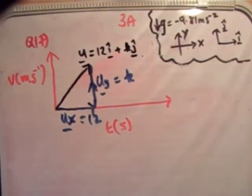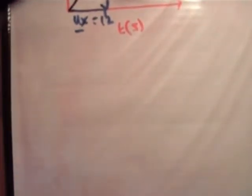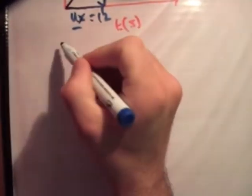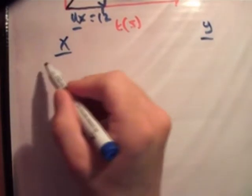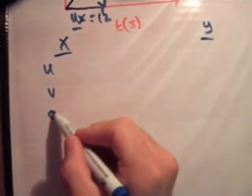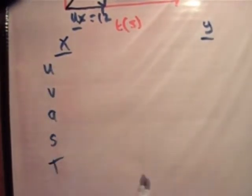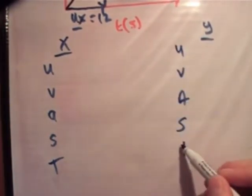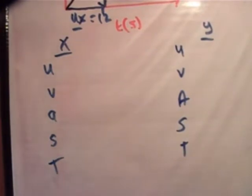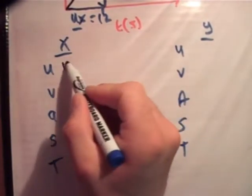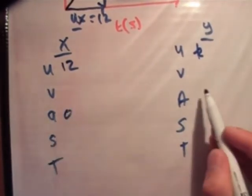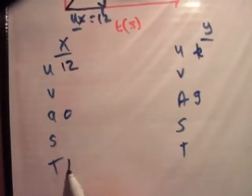Alright, what else are we told? We're told a small bit of information about the distances. So the next thing we need to do is break this up into our x dimension and our y dimension. We know the initial velocity in the x direction is 12 and in the y direction it's k. We know that the acceleration in the x is 0 and it's g in the y. And we know the time of course is t.